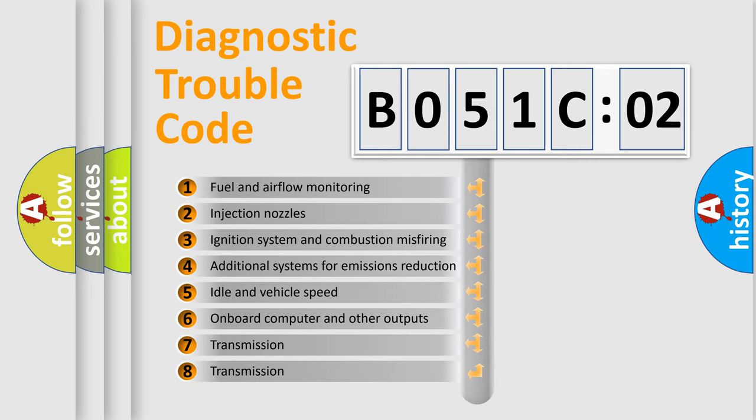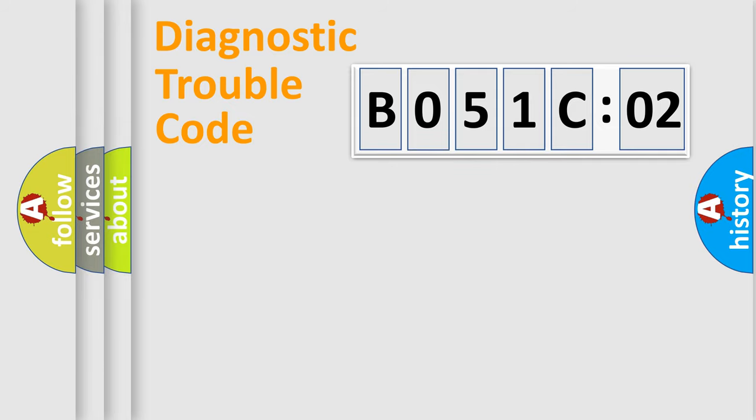The third character specifies a subset of errors. The distribution shown is valid only for the standardized DTC code. Only the last two characters define the specific fault of the group.